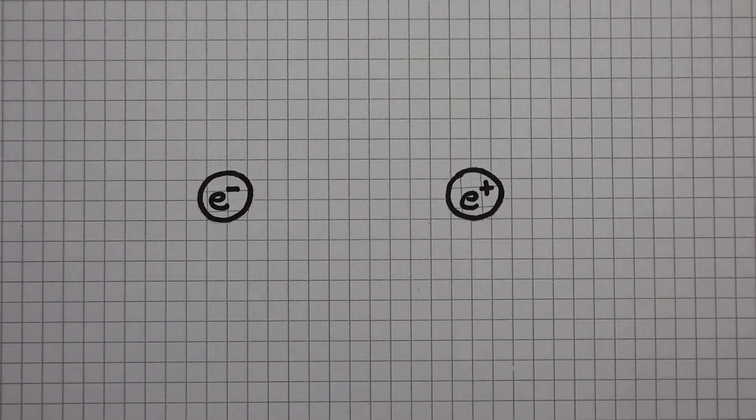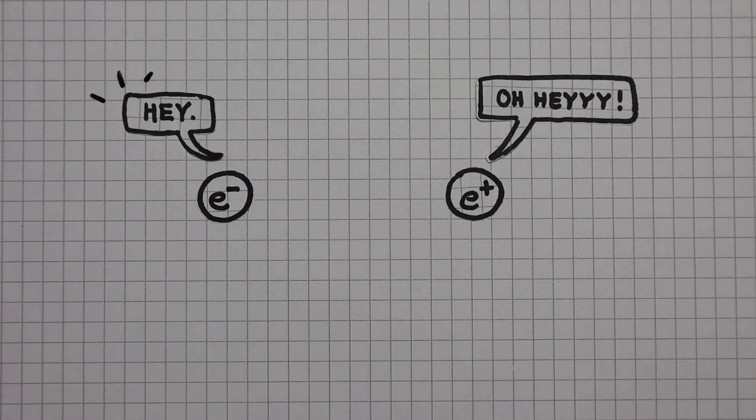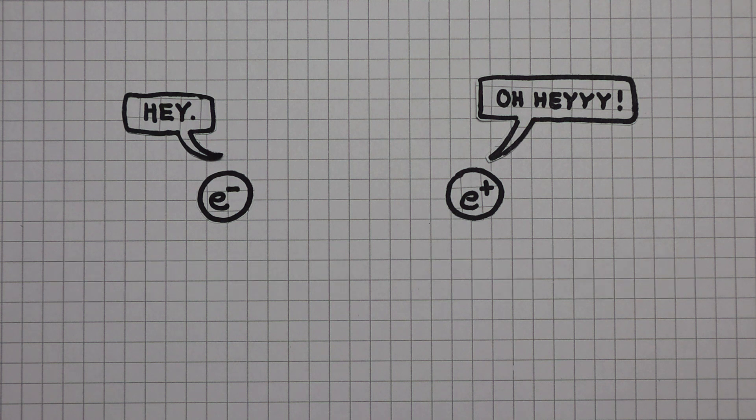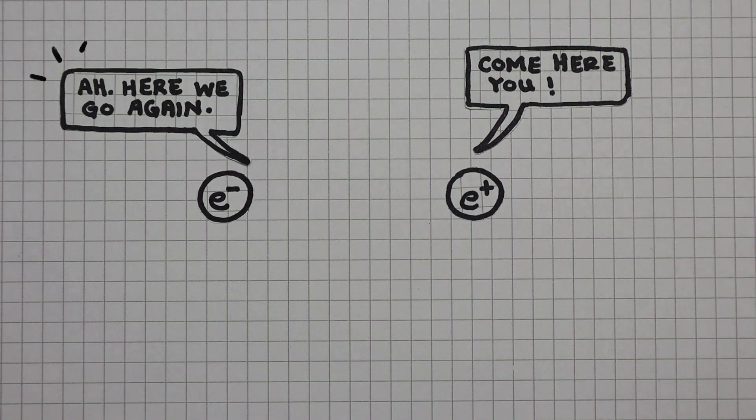We witness this in particle physics. When a subatomic particle like an electron meets its antiparticle, a positron, they annihilate to convert their mass into pure energy.